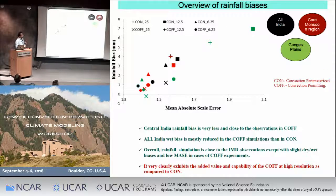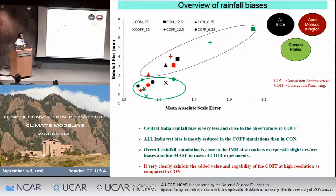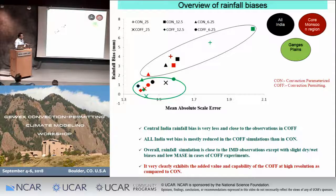Putting together the different experiments with respect to resolution, convection-on, and convection-off — plotting Mean Absolute Scale Error on the x-axis and rainfall bias on the y-axis — two distinct clusters emerge. One cluster corresponds to convection-parameterized simulations and the other to convection-off simulations. In the convection-off cluster, the Mean Absolute Scale Error is very low and the bias is also very low. When MASE is close to 1 the simulation is good; less than 1 is excellent. Convection-off combined with high resolution together provides the most added value in reducing bias related to the Indian summer monsoon.